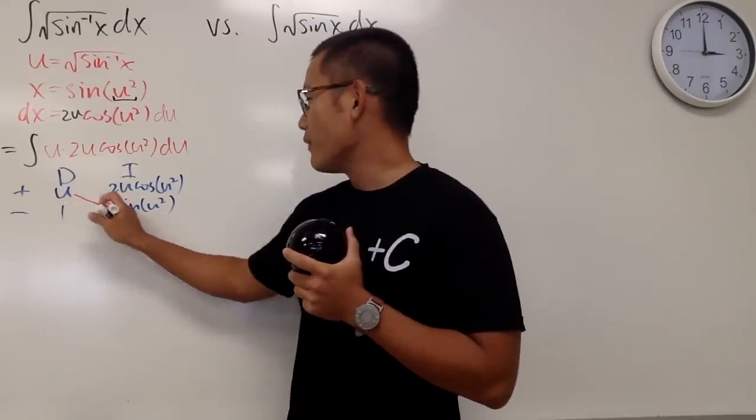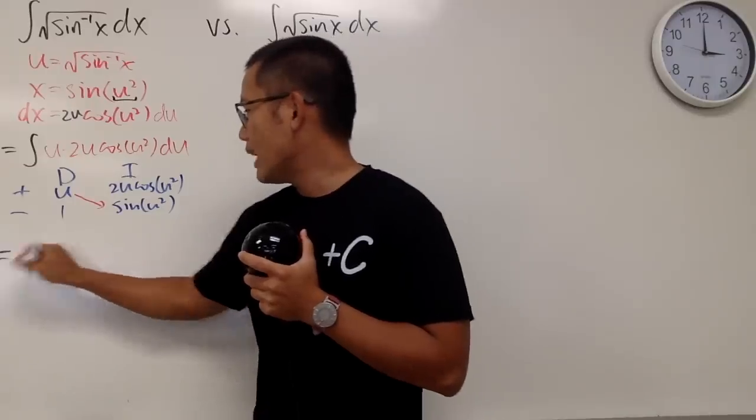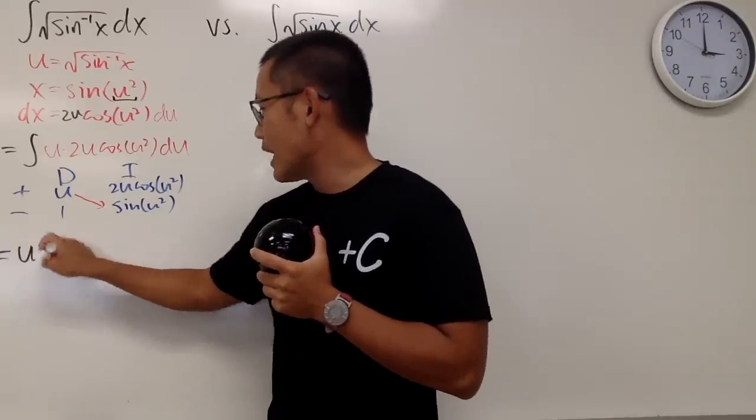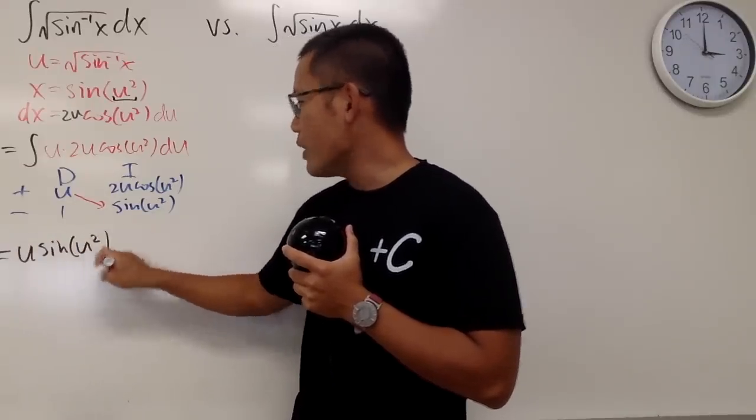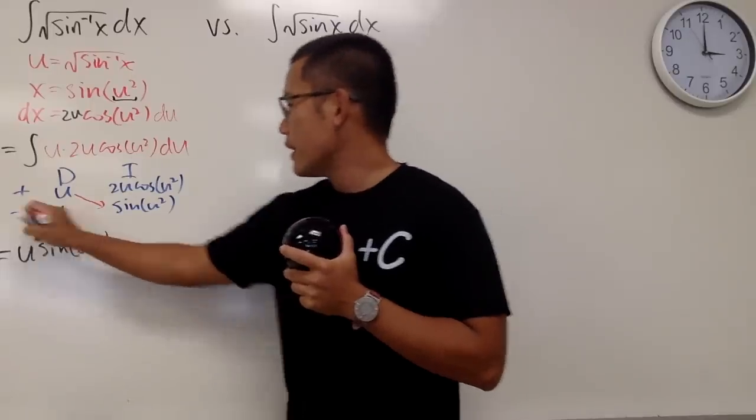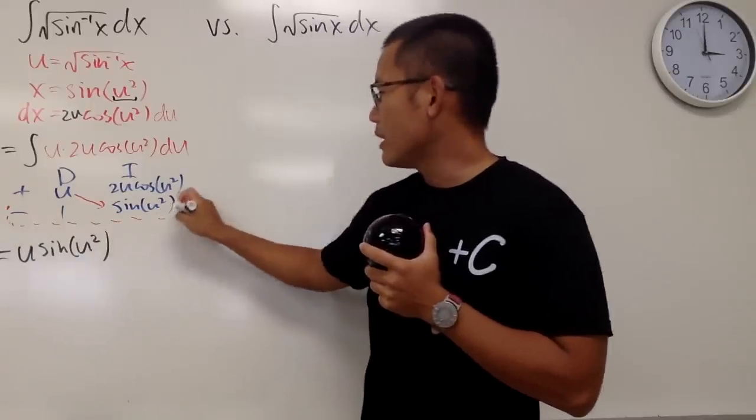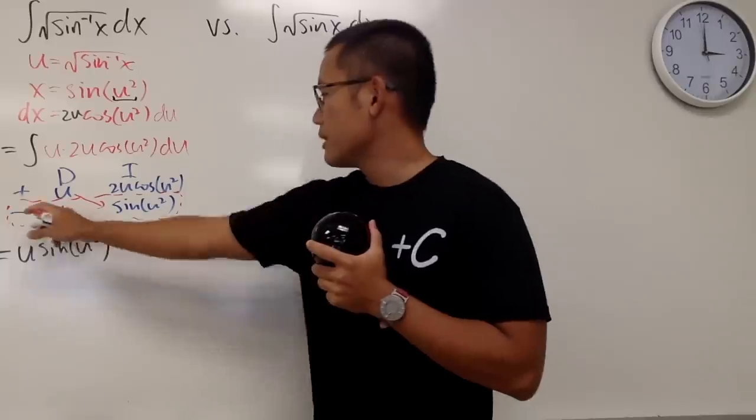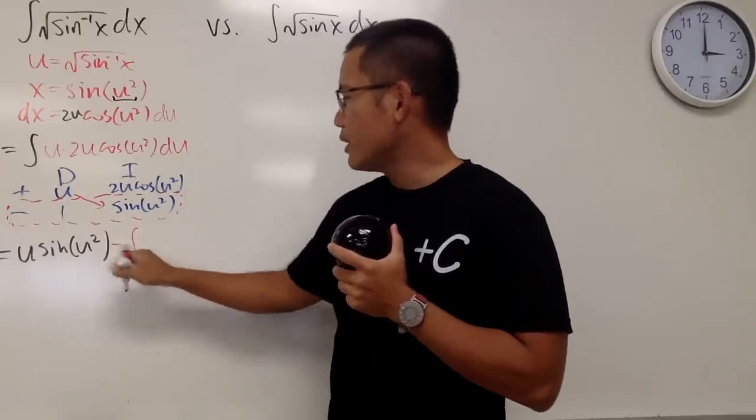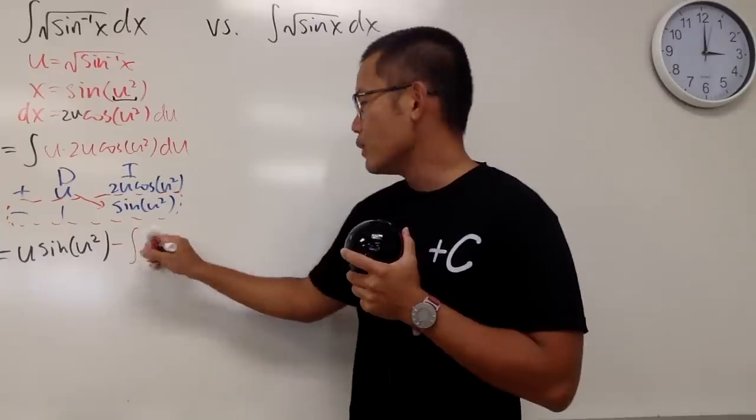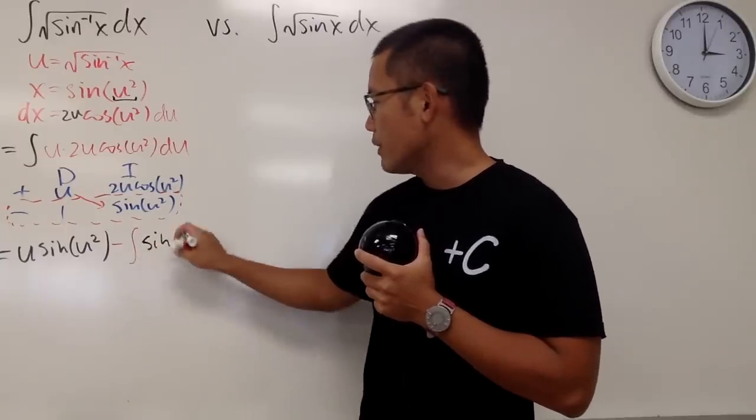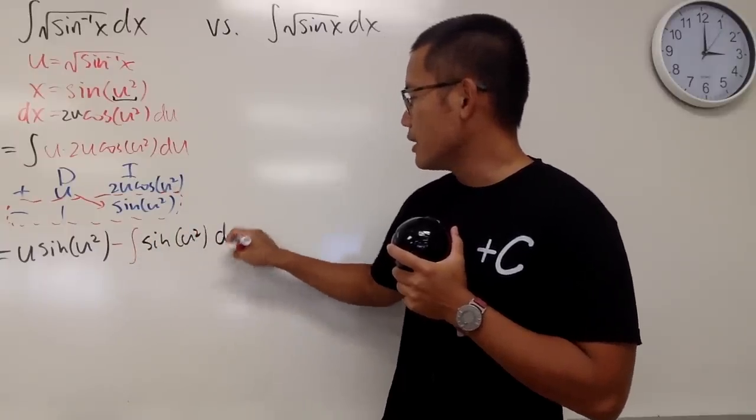Here is the first part of the answer, and we will have u times this, u times sine of u squared, and then of course, minus, right, because this right here, when you multiply a row, and this is a minus, and we have another integral, and 1 times this, we still have the sine of u squared, and this is still in the u world.